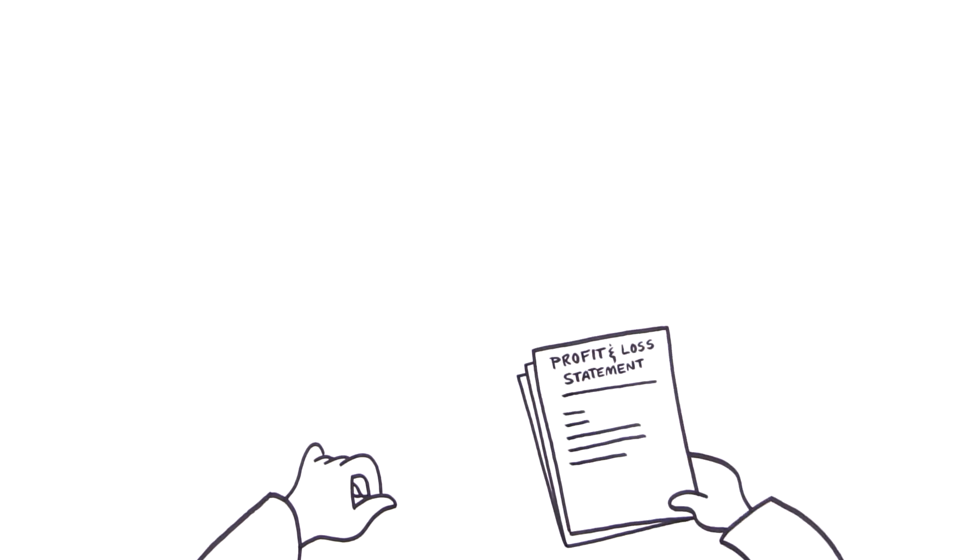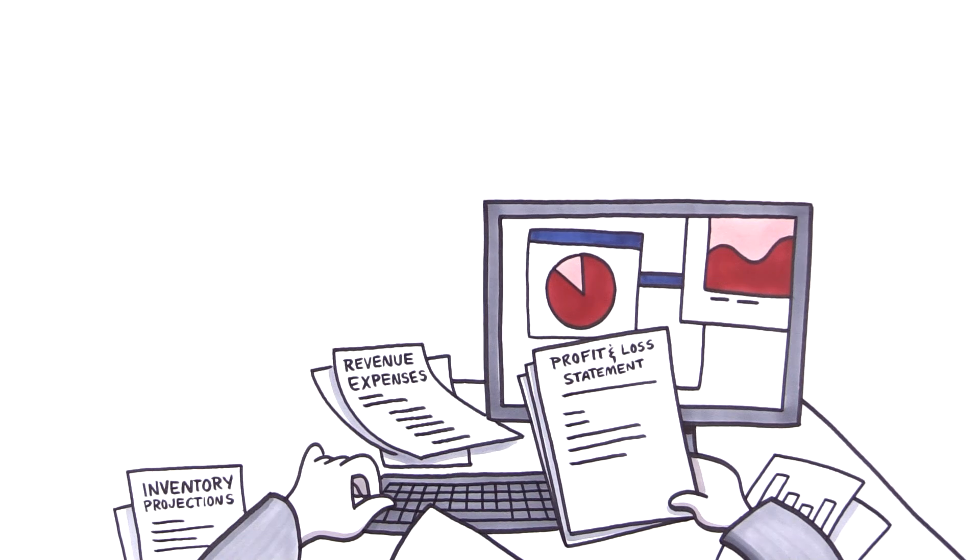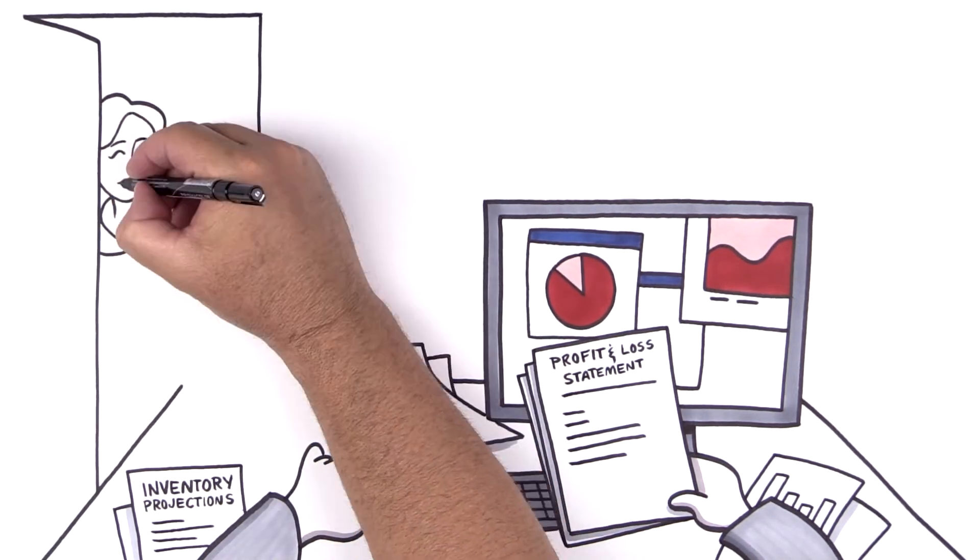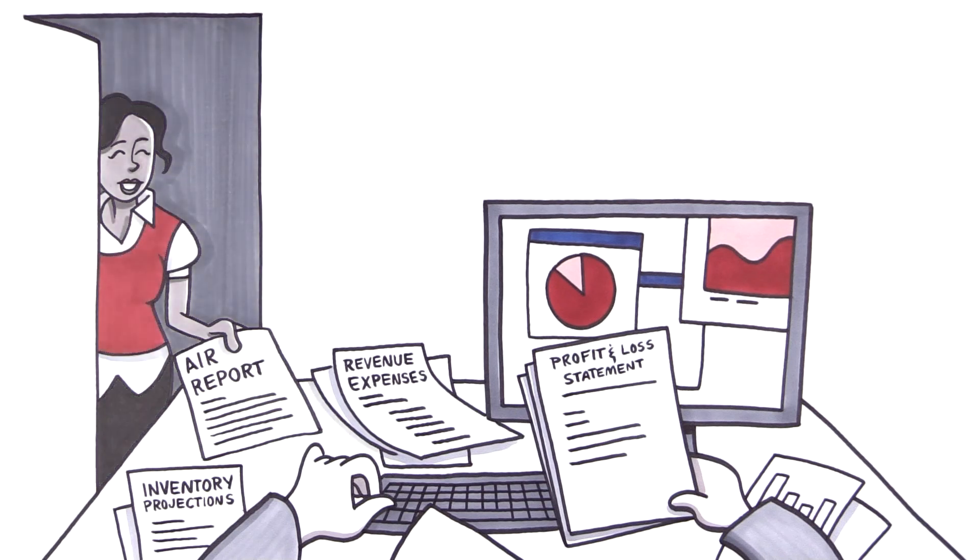You've got the P&L in front of you but it's not current. You're not sure if you can trust the latest AR report. The performance data from your various locations isn't consistent so you can't tell who is outperforming and who is underperforming.